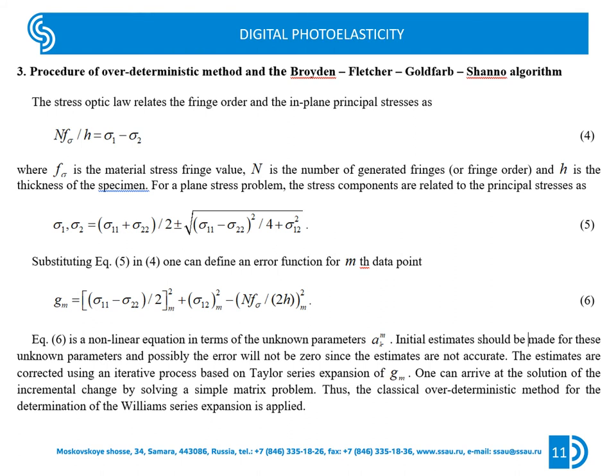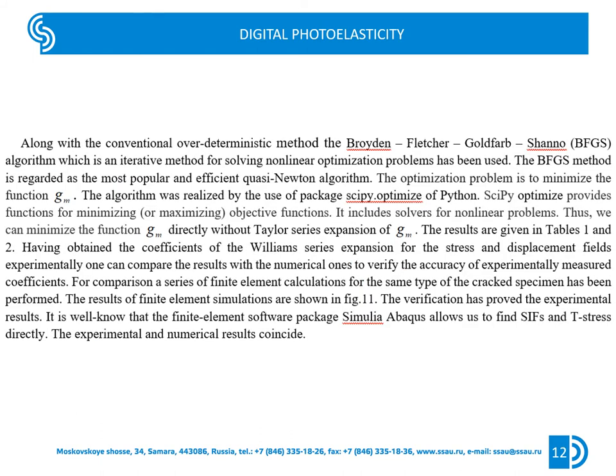Along with the over-deterministic method, the Broyden-Fletcher-Goldfarb-Shanno (BFGS) algorithm has been used. This method is an iterative method for solving non-linear optimization problems and is regarded as the most popular and efficient quasi-Newton algorithm.